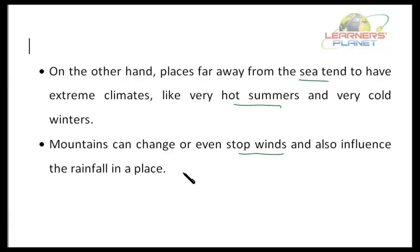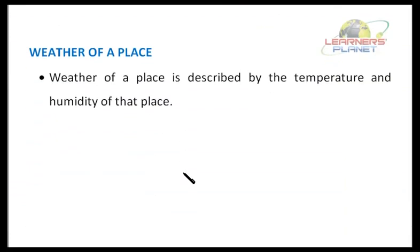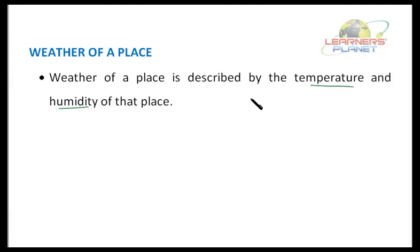That was all about the climate of a place. Now let us discuss about another interesting topic. Just as we discussed about climate of a place, we will now discuss about the weather of a place. The weather of a place is described by the temperature and humidity of that place. Let us discuss these factors which affect the weather of a place in detail.